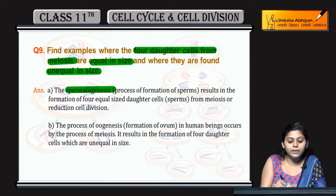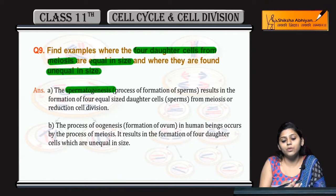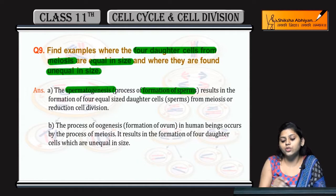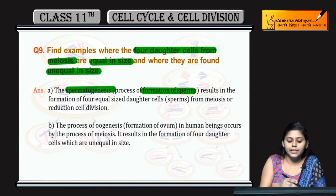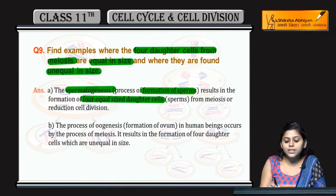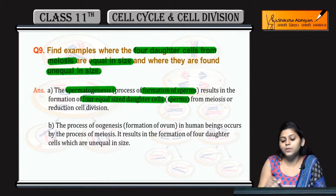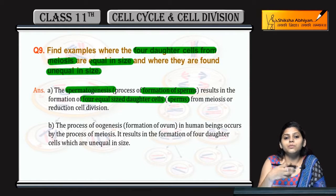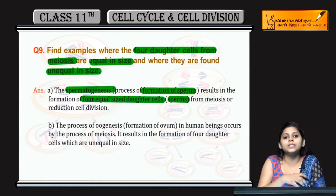When spermatogenesis is the process of formation of sperms, the sperms are equal in size, meaning the four daughter cells are equal in size. Spermatids are produced, and sperms and spermatids are equal in size.